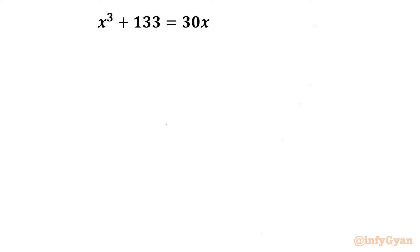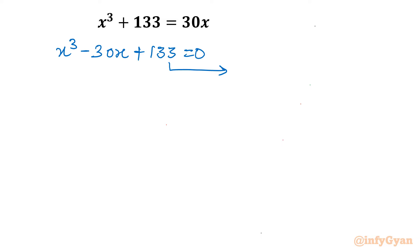Our equation is x cubed plus 133 equal to 30x. Taking all terms to one side, we can write x cubed minus 30x plus 133 equal to 0. Now we will take the help of the rational root theorem. The eligible factors of 133 are plus or minus 1, plus or minus 7, plus or minus 19. Eligible factors of the leading coefficient are plus or minus 1.